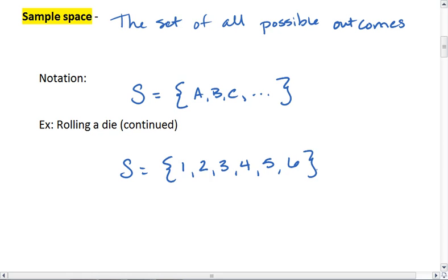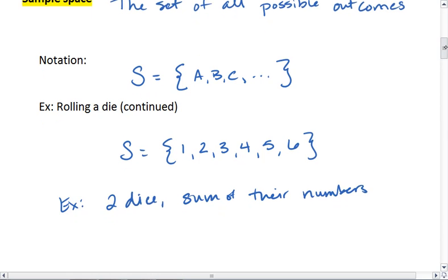If you want another example just to make this clear, you could say the possibilities of what the numbers on your dice add to. So if you rolled two dice, the sum of their numbers. So that sample space would be, at lowest, we could have a 1 and a 1, which gives us 2.